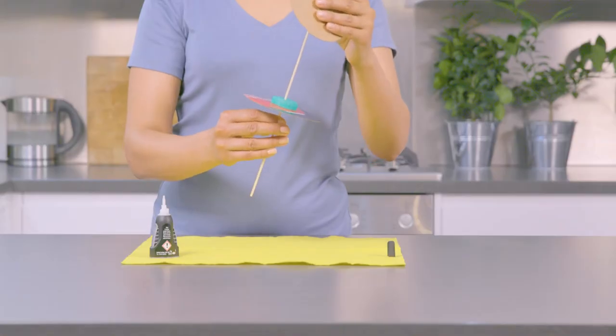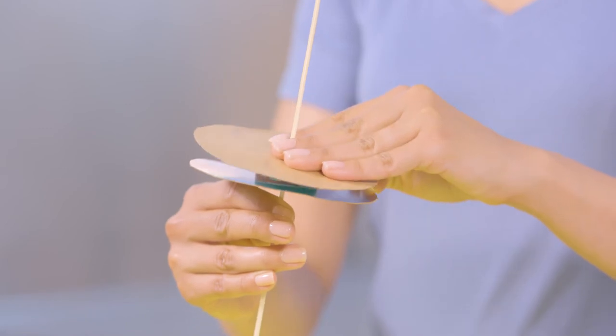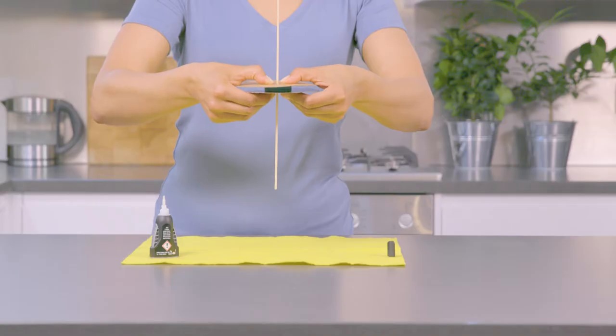Skewer on the second circle, sticking it to the other end of the bottle. Give it a while to dry. This is your crane.